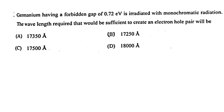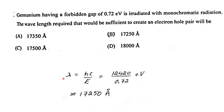Germanium has a forbidden gap of 0.72 eV and is irradiated with monochromatic radiation. The wavelength required to create an electron-hole pair is found using λ = hc/E = 12,420/E (in Å). With E = 0.72 eV, solving gives λ ≈ 17,250 Å. Therefore the answer is 17,250 Å.